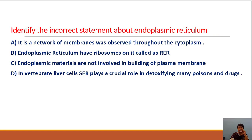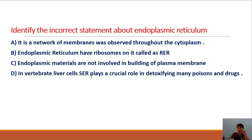Identify the incorrect statement about endoplasmic reticulum. Option A: it is a network of membranes observed throughout the cytoplasm — correct. Option B: endoplasmic reticulum has ribosomes on it called RER — correct. Option C: endoplasmic materials are not involved in building of plasma membrane — this is incorrect, because endoplasmic materials ARE involved in building plasma membrane. Option D: in vertebrate liver cells, smooth endoplasmic reticulum detoxifies many poisons or drugs — correct. So the incorrect statement is option C.